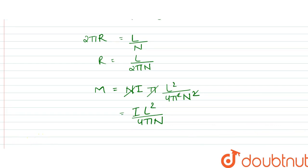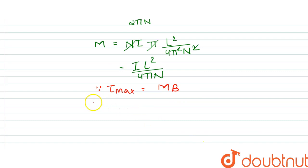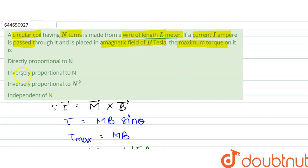Since tau max is equal to M times B, what that implies is tau maximum equals M, which is given as I L squared times B by 4 pi N. So tau max from here is proportional to 1 by N, so it is inversely proportional to N. That is option B, our answer. Thank you.